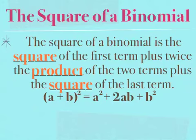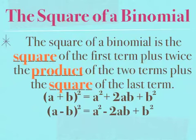You have to be careful though, because if you have a minus b squared, you would have a squared still — your first term squared — but now it's going to be minus two times a times b, but then it's going to be plus b squared.